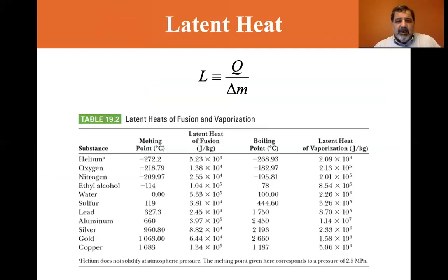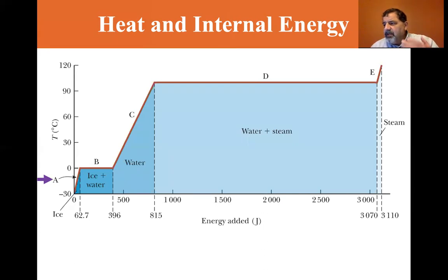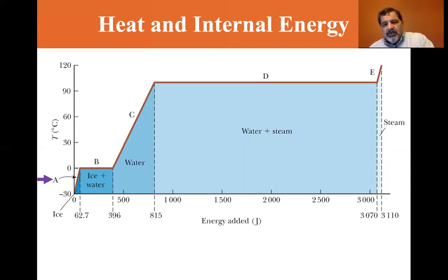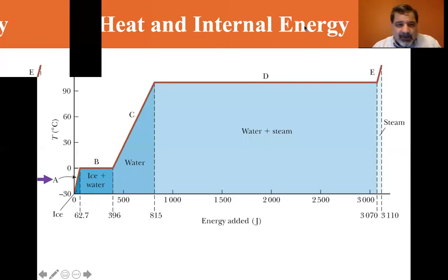Okay, we have our example here. Consider the energy required to convert a system consisting of one gram of ice at minus 30°C to steam at 120°C. We're going to go from one gram of ice at minus 30°C to steam at 120°C, and we'll use a graph to walk through each step.